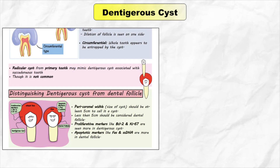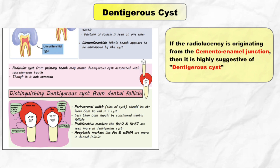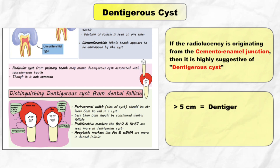Next point is pericoronal radiolucency. If the radiolucency is originating from the cementoenamel junction, then it is highly suggestive of dentigerous cyst. How to differentiate a dentigerous cyst from a dental follicle? It depends on the size of the lesion — if it is more than 5 mm, then you can consider it as a dentigerous cyst; otherwise it could be a dental follicle only.